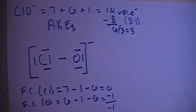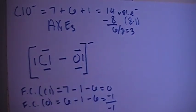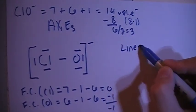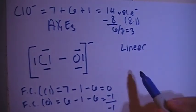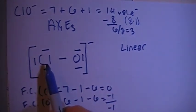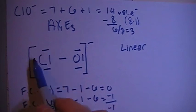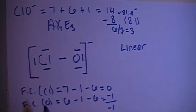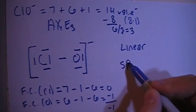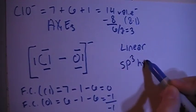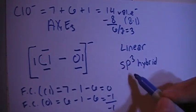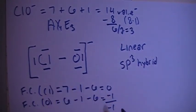Now we talk about the shape. Just because it has two atoms, this is going to be technically a linear shape. And in terms of hybridization, looking at the chlorine as a central atom, there are 1, 2, 3, 4 bonding sites or electron groups, so that means you need 4 orbitals — sp3 hybrid. So 1 s and 3 p, that's 4 orbitals for 4 electron groups.